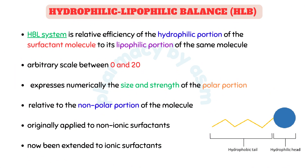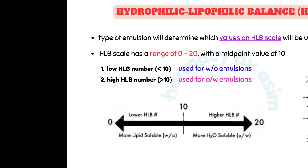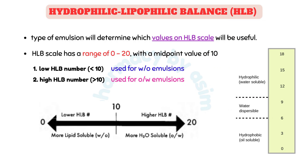It was originally applied to non-ionic surfactants, but has now been extended to ionic surfactants as well. The HLB number determines the type of surfactant required to make an emulsion. The HLB scale ranges from 0 to 20 with a midpoint value of 10. Surfactants with a low HLB number less than 10 are more lipid-soluble and are used for water-in-oil emulsions, while surfactants with a high HLB number greater than 10 are more water-soluble and are used for oil-in-water emulsions.